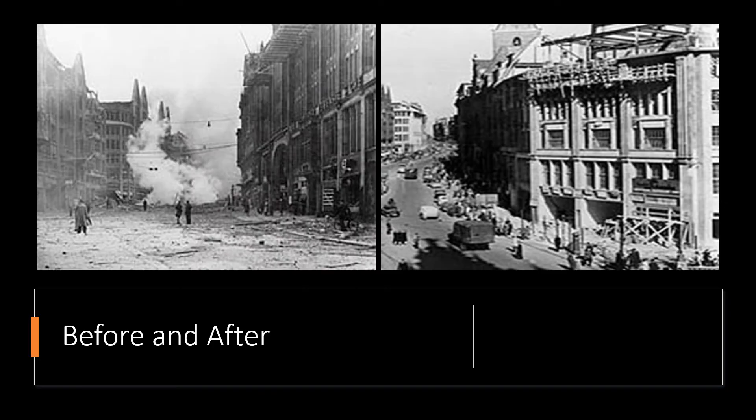What you see before you are two photographs of a street in Hamburg — the one on the left was before the Marshall Plan, and the one on the right was after the Marshall Plan.